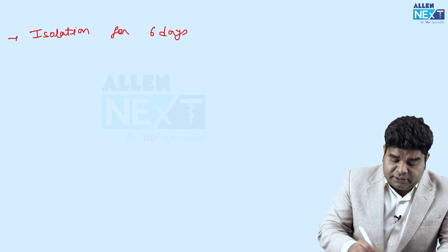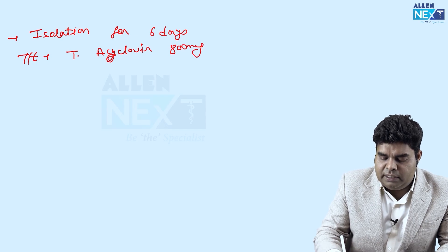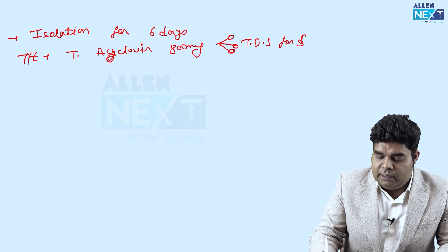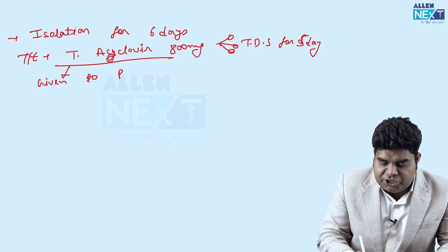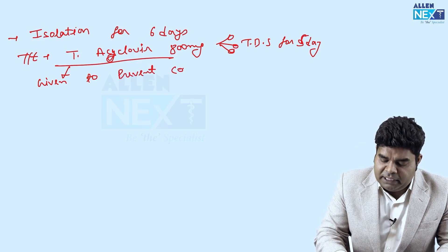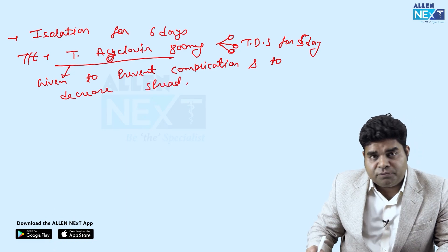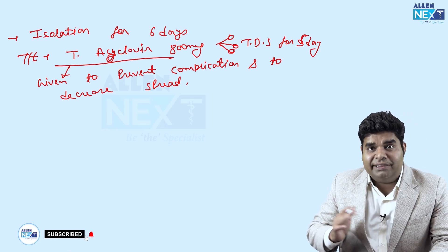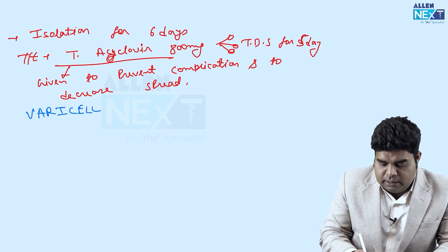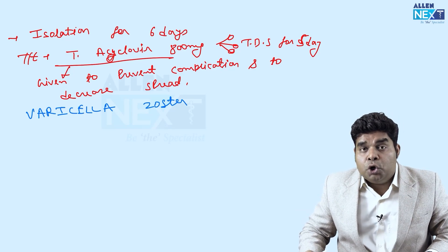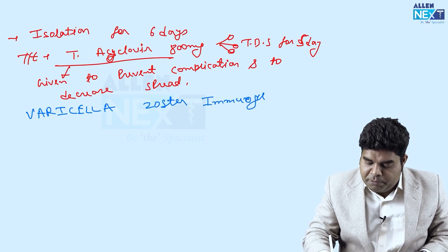The treatment of chickenpox is tablet acyclovir, which in adults can be given 800 mg three times a day for five days. But this is not strictly needed in adults. Tablet acyclovir is given to prevent complications of chickenpox and to decrease its spread, but it will not cure the disease. Another option is varicella zoster immunoglobulin, given to all family members of the patient as chemoprophylaxis to prevent them from developing chickenpox infection.